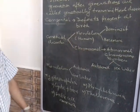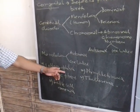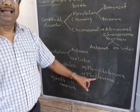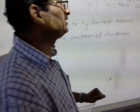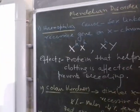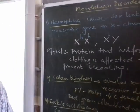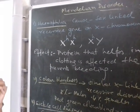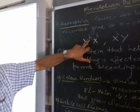Let us discuss some genetical disorders: hemophilia, cystic fibrosis, sickle cell anemia, phenylketonuria, and thalassemia. Hemophilia is a sex-linked recessive disorder. The gene occurs on the X chromosome, so we call it an X-linked gene. If the X chromosome carries this defective recessive gene, the individual may be affected.